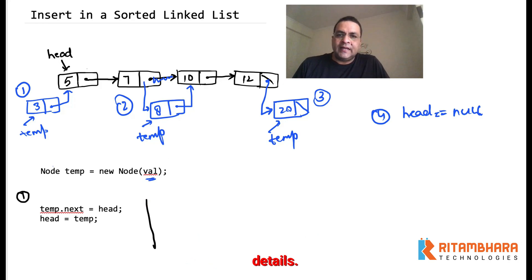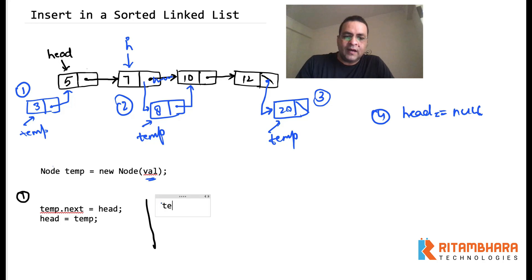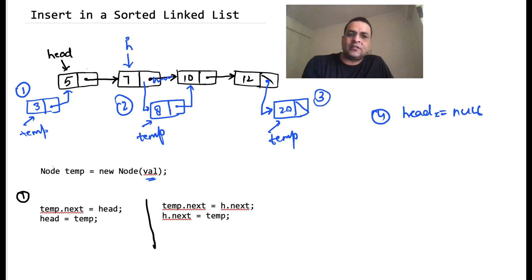Now let's consider the second case. In the second case, first of all we will have to reach the point after which we want to insert temp. So we have to reach node 7, after which we will insert the new node. Once we reach this point — let's say h is holding the address of this point — we will say temp.next = h.next, and then h.next = temp. We first store the address of h.next in the next of temp so that we don't lose the rest of the list, and then we change the pointer of h.